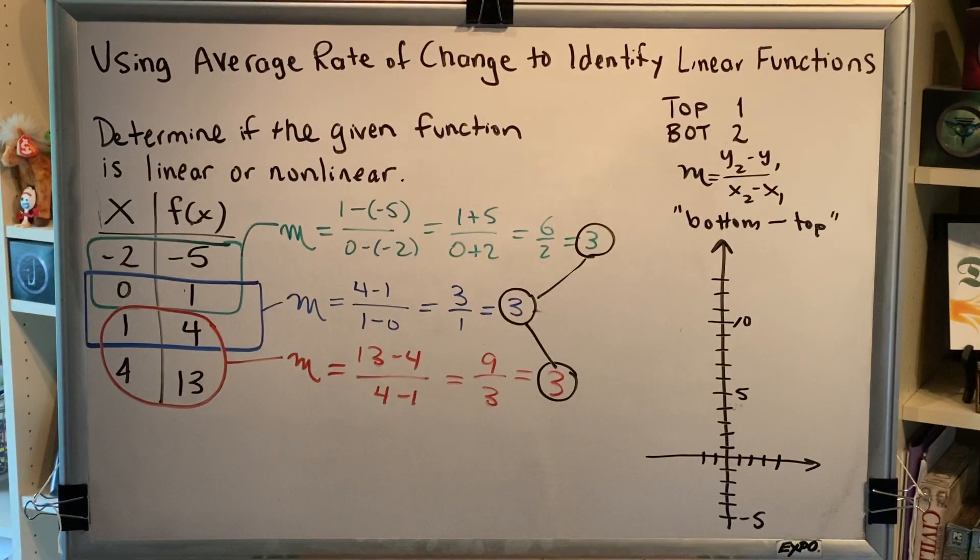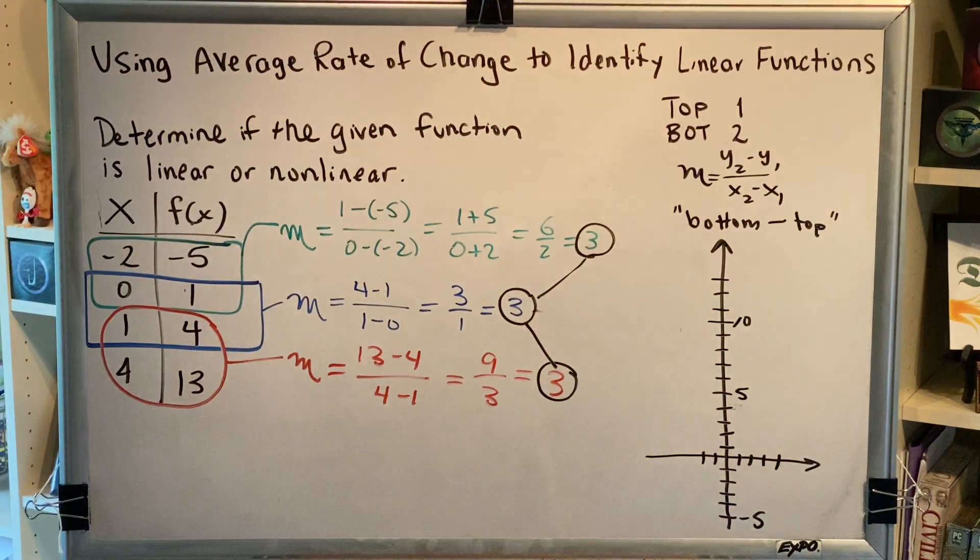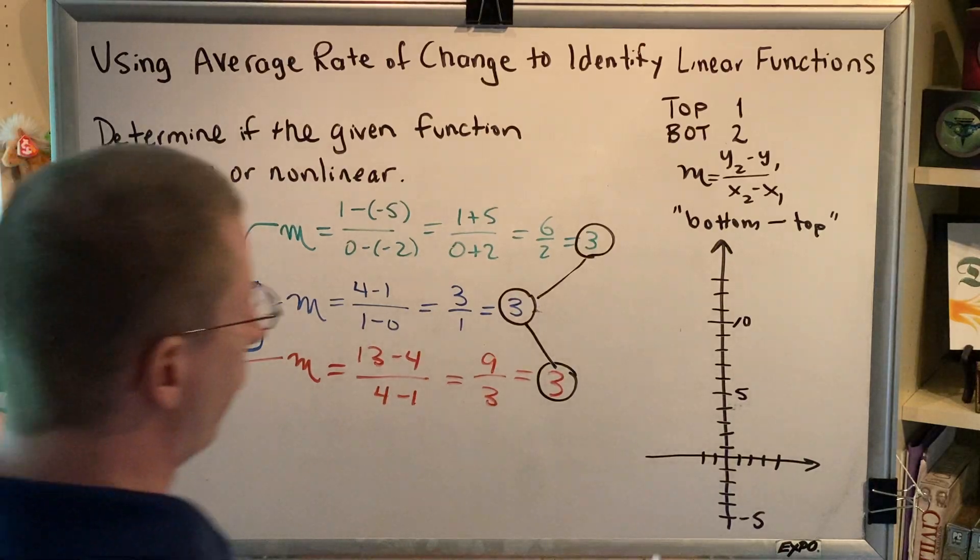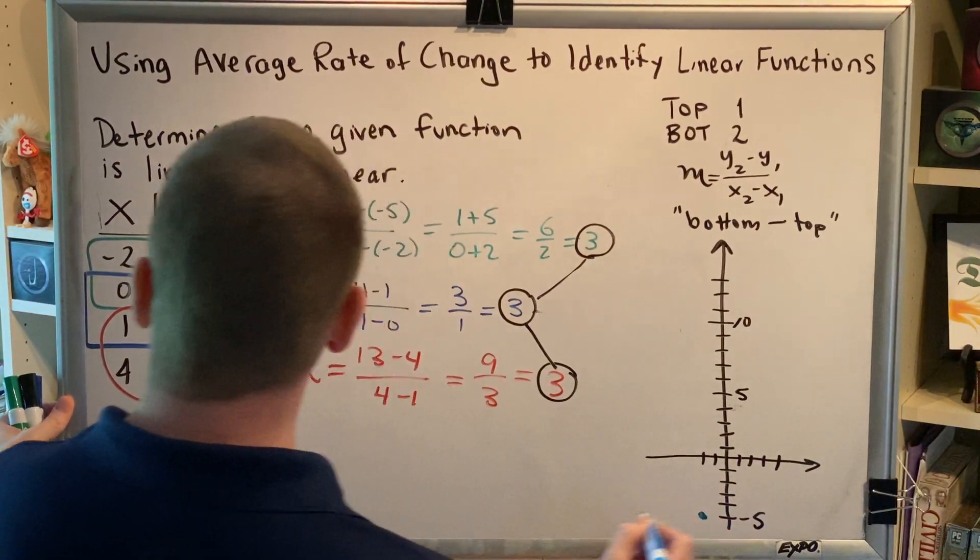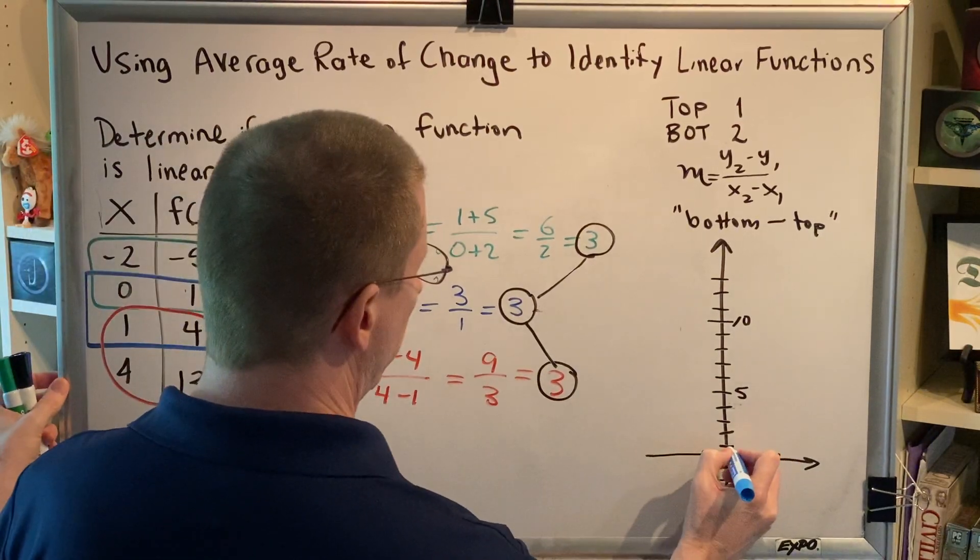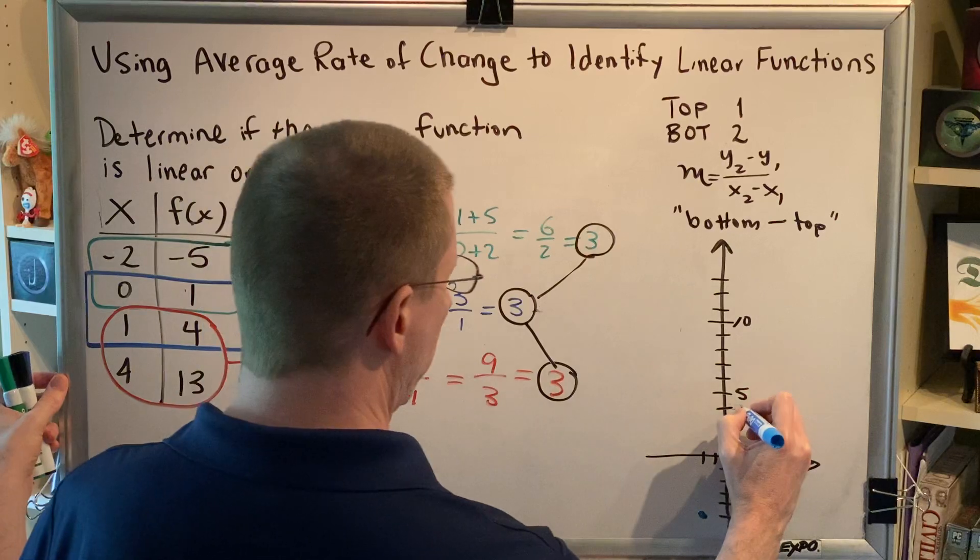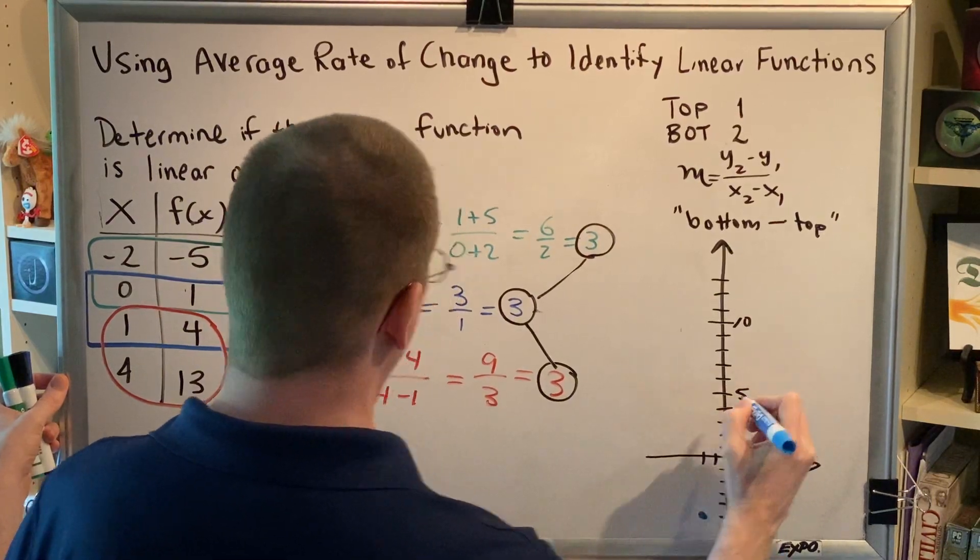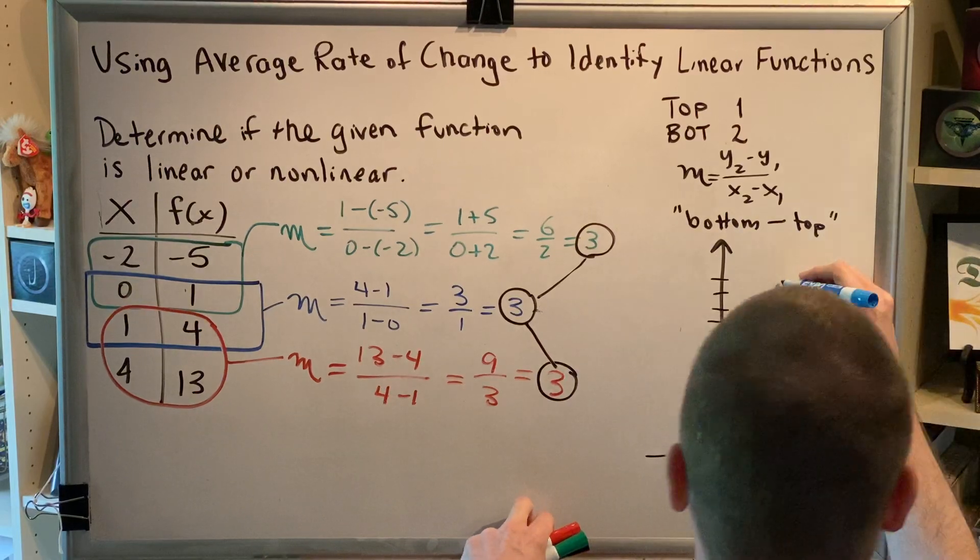Okay, let's plot all the points that we know to be on this particular function. So we've got negative 2, negative 5, so that would be down here. We've got 0, 1, that's the y-intercept. 1, 4. And 4, 13, so 4 and all the way up here would be 13.